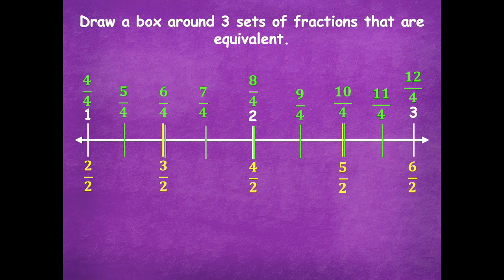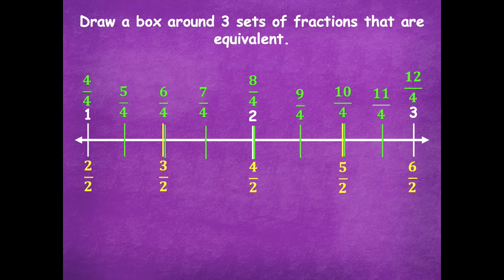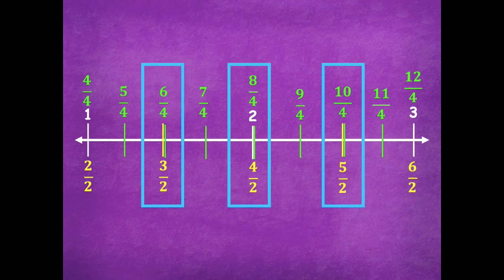Now you're going to draw a box around three sets of fractions that are equivalent. Where are those fractions meeting at the same point on the number line? Six fourths is equivalent to three halves, eight fourths is equivalent to four halves, and ten fourths is equivalent to five halves. You can also see that four fourths is equivalent to two halves, and twelve fourths is equivalent to six halves — those are equivalent fractions as well. Great job with that!